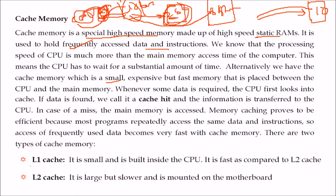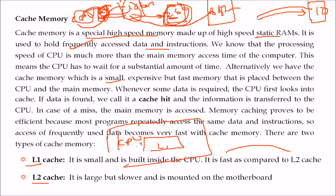There can be two or more levels of cache: L1 cache is inside the CPU and is the fastest. L2 cache is not inside the CPU but is on the motherboard where the CPU is placed — it has slightly more access time since it is outside the CPU. There are also L3 and L4 caches.